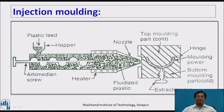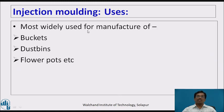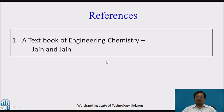In actual operation, plastic is filled through the hopper. The Archimedean screw forwards the material into the heating section, where it gets converted into a molten mass. Because of the Archimedean screw, this molten mass is pushed in between the top and bottom molding parts. After this, the article is cooled and taken out. The uses of injection molding include the manufacture of buckets, dust bins, flower pots, etc. Reference: Engineering Chemistry by Jain and Jain. Thank you.